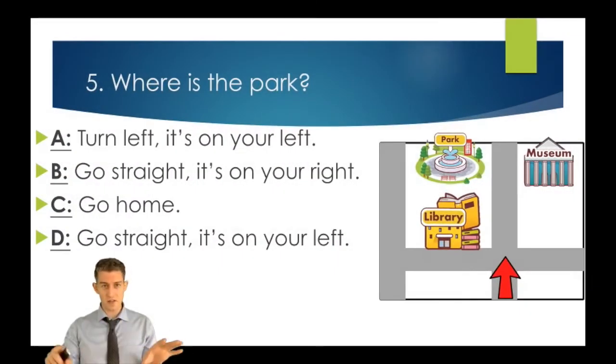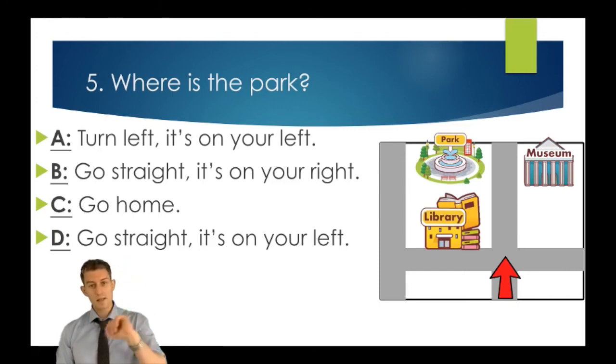Number five, last one, then finished. Where is the park? A, turn left. It's on your left. B, go straight. It's on your right. C, go home. D, go straight. It's on your left. Circle A, B, C, D. Five seconds, go.